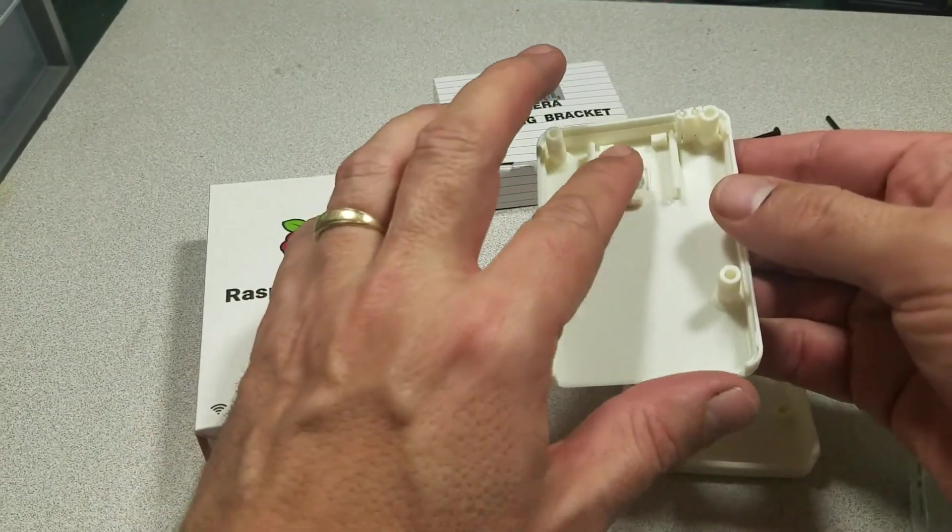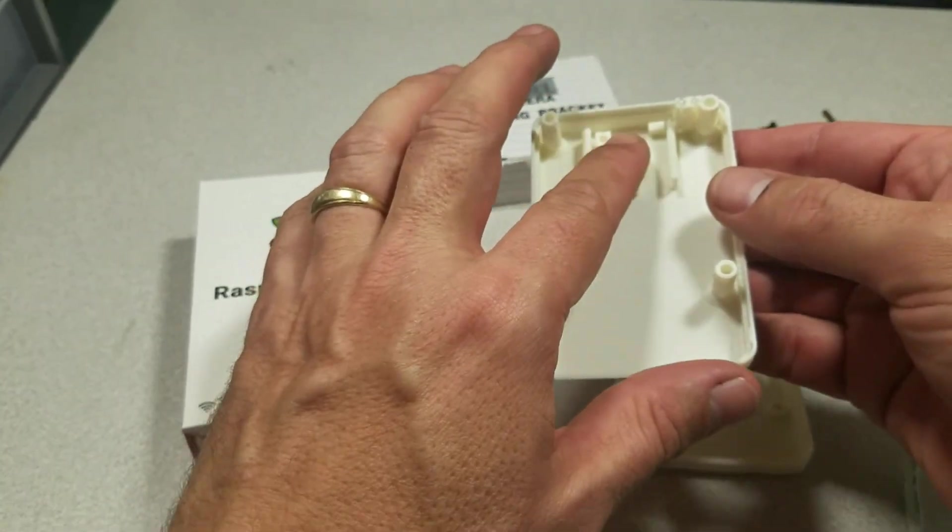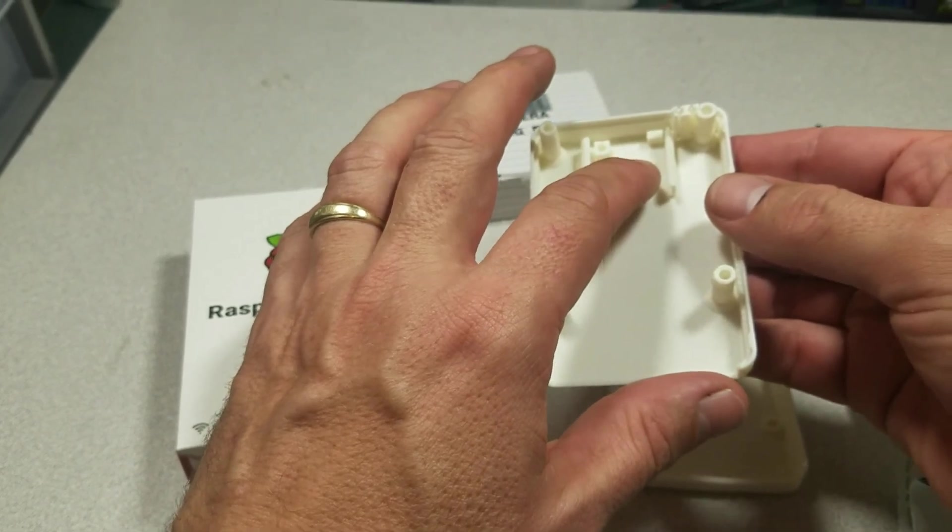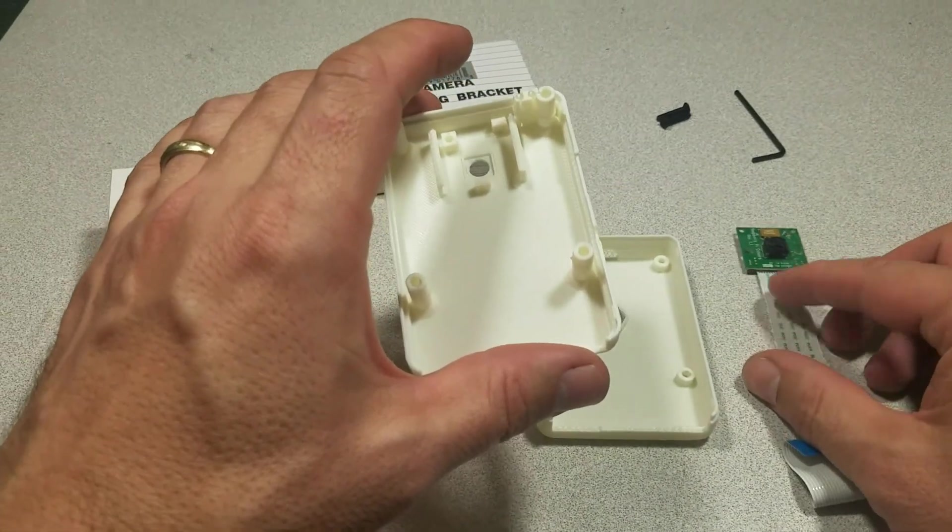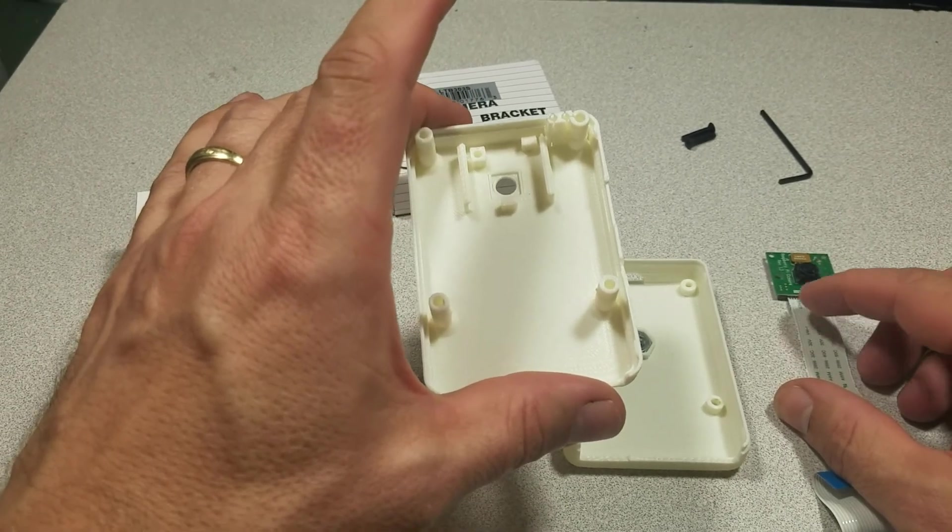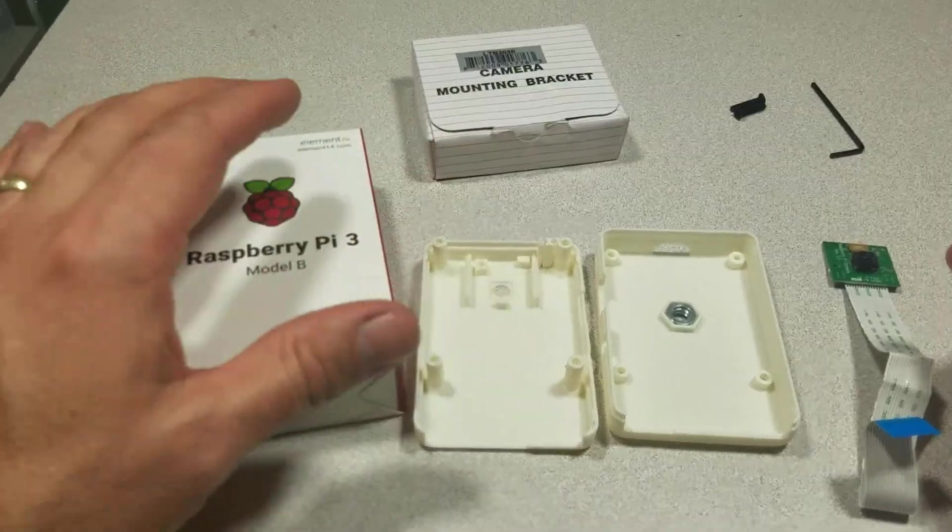And this enclosure here is made to hold the Raspberry Pi camera module, either the 5 megapixel or 8 megapixel model without tools. Let's get started.